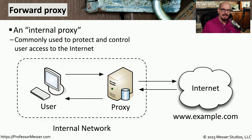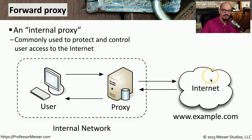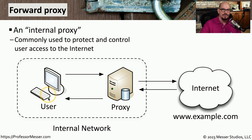If you're using a proxy inside your network to control outbound traffic to the internet, you're using a forward proxy, sometimes called an internal proxy. With a forward proxy, users make requests to an internal proxy server, which then makes the request out to the internet. The website replies back to the proxy, which examines the traffic, and if everything looks legitimate, sends the response down to the user.